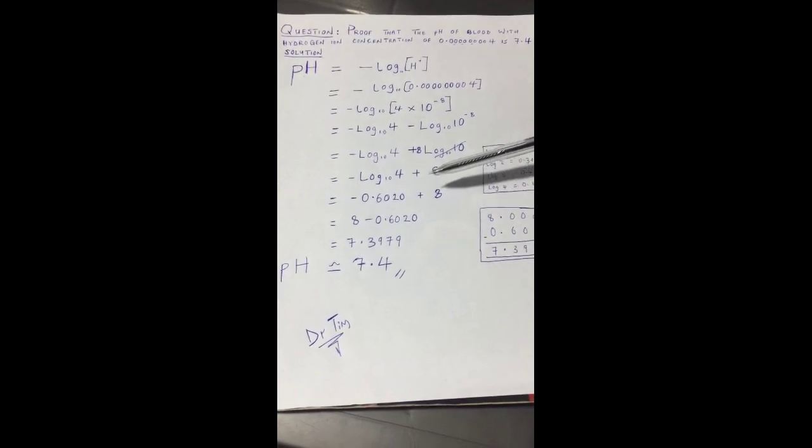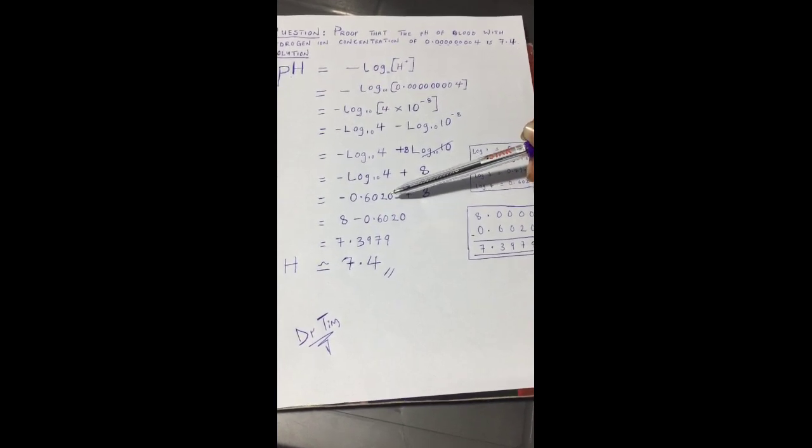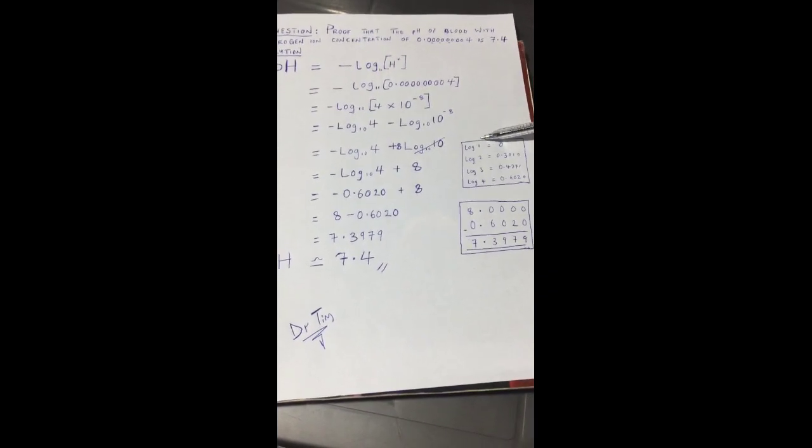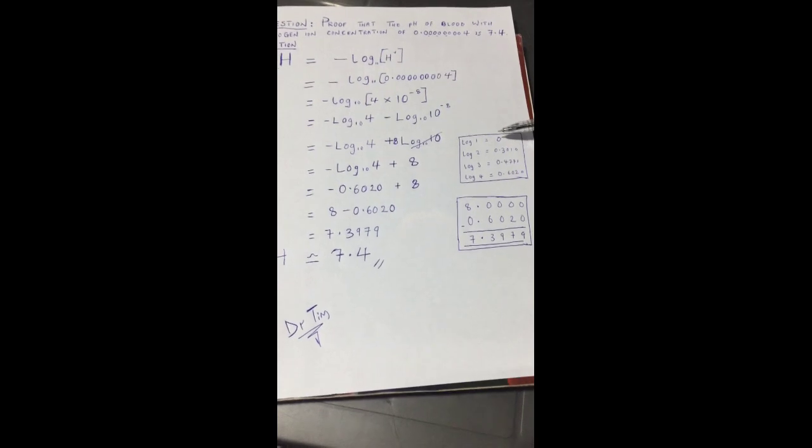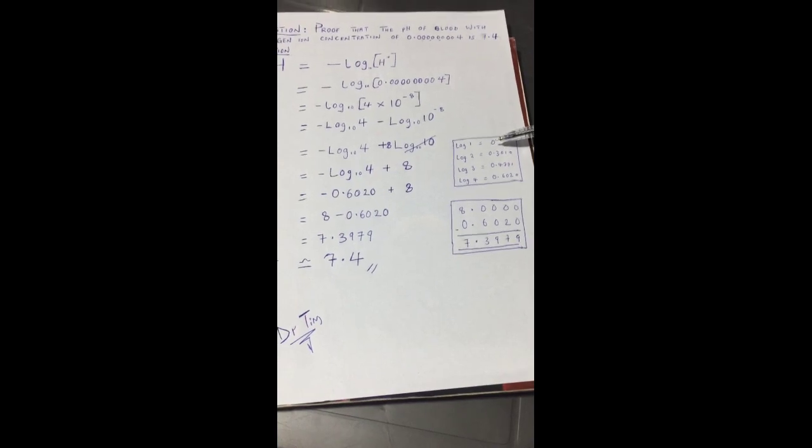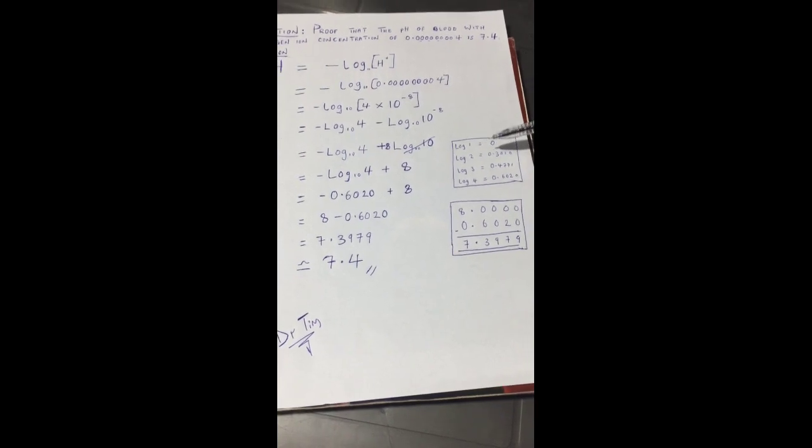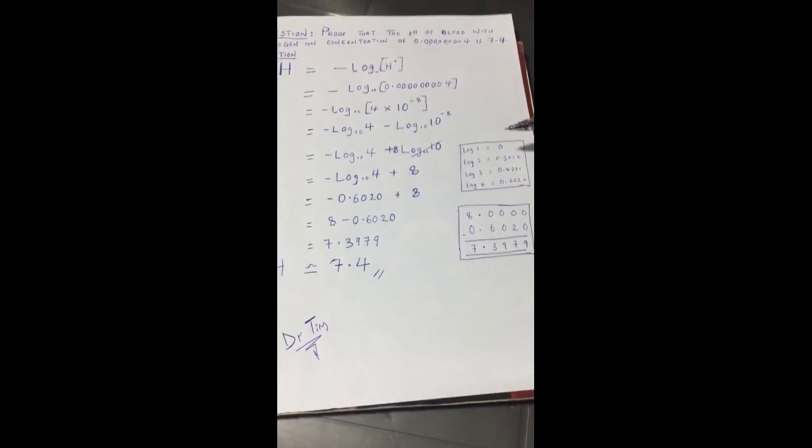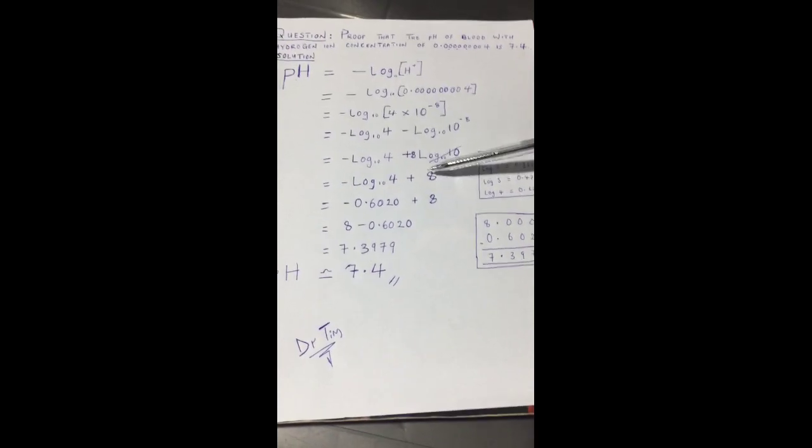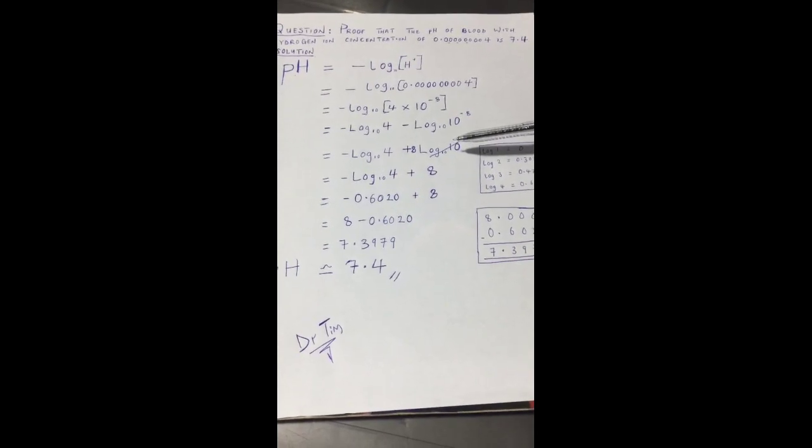Negative log to base 10 of 4 is minus 0.6020. We're meant to know in secondary school that log 1 is 0, log 2 is 0.3010, log 3 is 0.4771, and log 4 is 0.6020. So if log 4 is 0.6020, the negative log of 4 is negative 0.6020 plus 8.